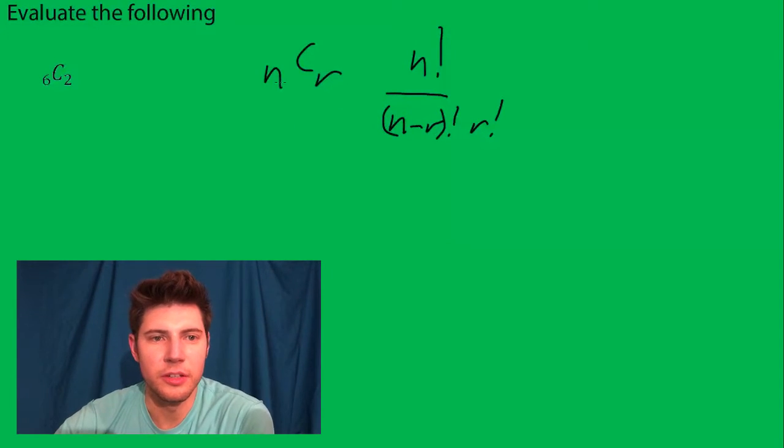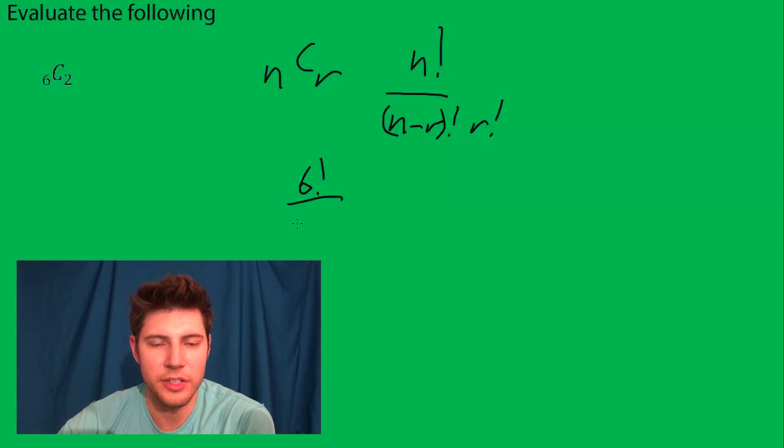So we just plug this in. So it's six factorial over six minus two factorial two factorial.